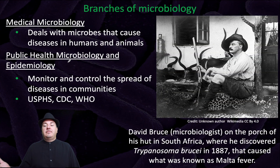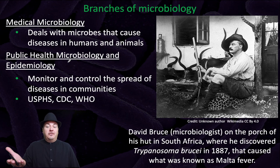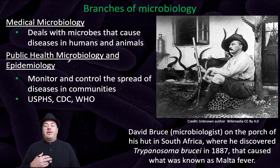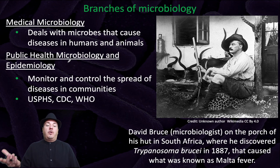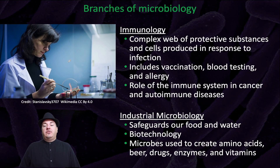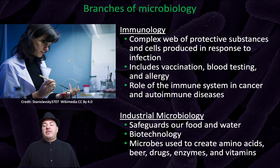Farther back in time, we had individuals you might not think of as modern scientists — for example, this was David Bruce, a microbiologist who back in 1887 discovered the microorganism that causes Malta fever. We have immunology, which is a complex web of protective substances and cells produced in response to infection. This includes vaccination, blood testing, allergies, and the role of the immune system in cancer and autoimmune diseases.